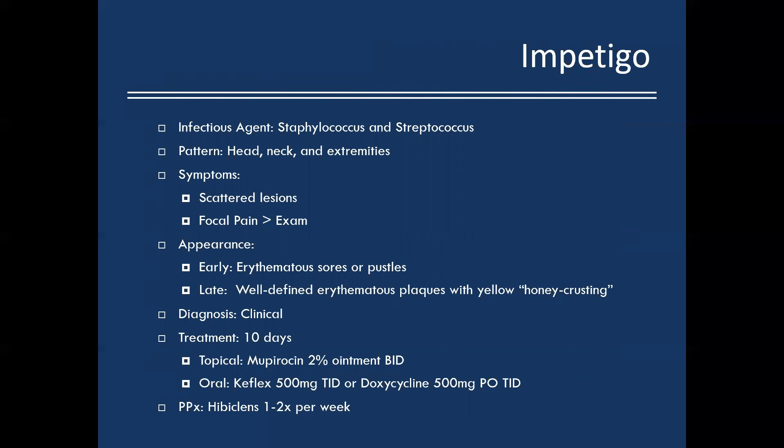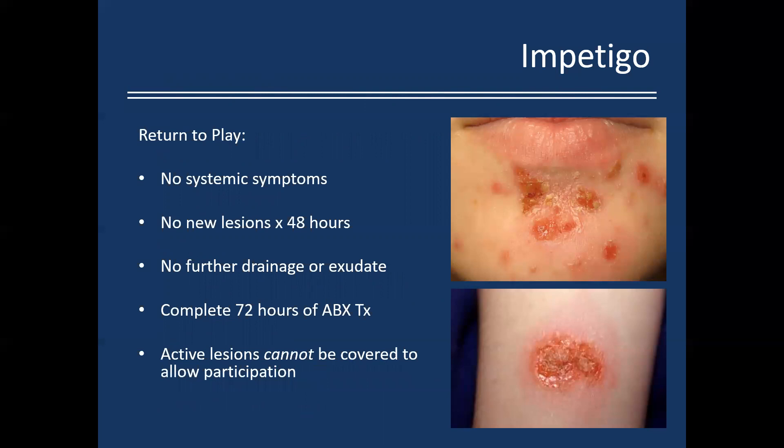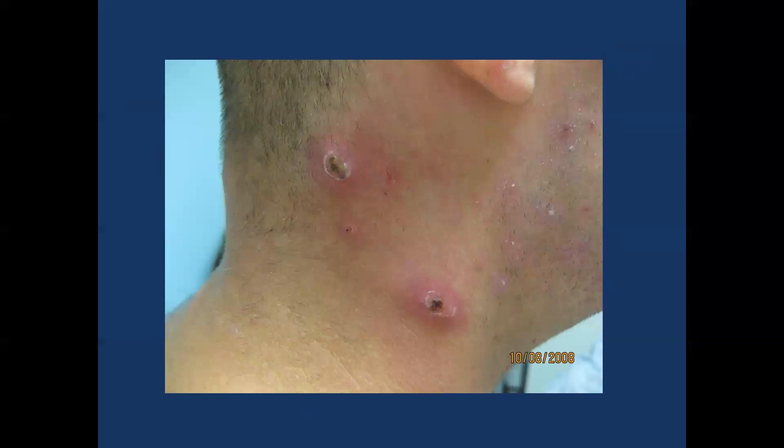For athletes with recurrent impetigo, there's good prophylaxis data comparing bleach baths to topical chlorhexidine soap. Data favors bleach baths, but compliance is much poorer. I recommend Hibiclens — topical chlorhexidine soap — one to two times per week during the season. Return to play requires: no systemic symptoms, no new lesions for 48 hours, no further drainage, and 72 hours of antibiotic treatment. Active lesions cannot be covered, so start antibiotics ASAP.